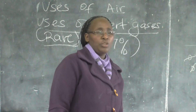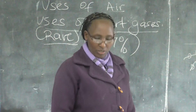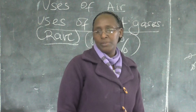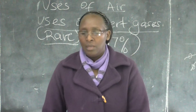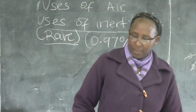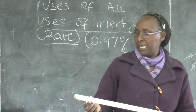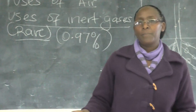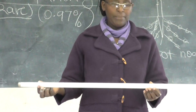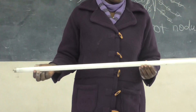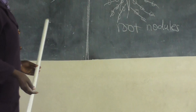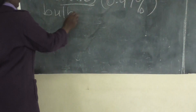Inert gas is also important because it is used in lighting the bulbs. Now I want you to look keenly on this — I am holding something. What am I holding? This is a bulb. What type of bulb is this?